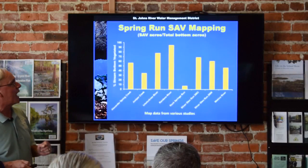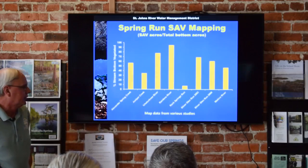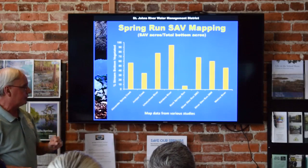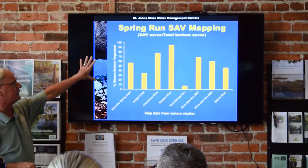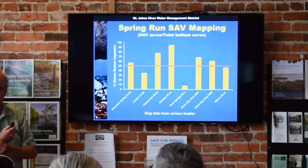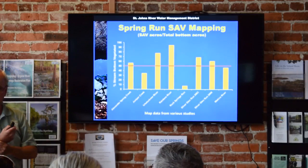We also map submerged vegetation. From mapping studies conducted in a number of spring run streams here in North Florida, you first delineate the whole stream — the bank and stream bottom — then map your submerged vegetation onto that base map. You can then calculate what percent of the total stream bottom is actually vegetated with submerged grass beds. In most spring runs it's half or more of the total bottom area, which makes it a really significant habitat in these clear-water spring run streams.